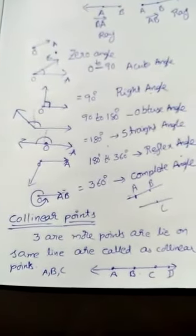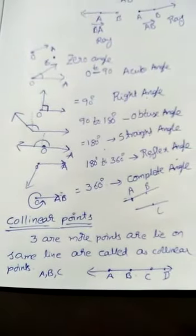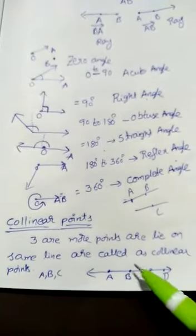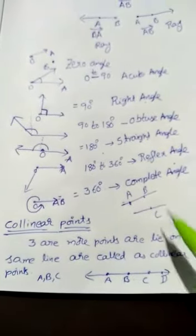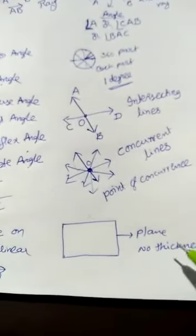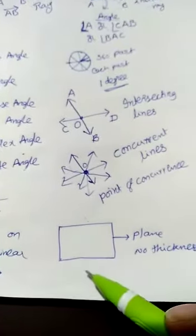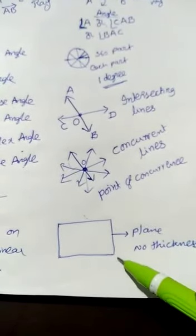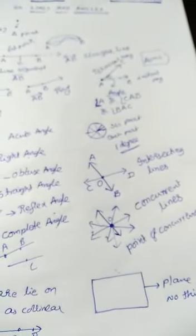Collinear points: three or more points lying on the same line are called collinear points. Here, A, B, C are called collinear points. If they do not lie on the same line, A, B, and C are not called collinear points. The next concept is plane. A plane has length and breadth but does not have any thickness. Examples include a book, a wall, a board, or a table. Anything flat comes under a plane.